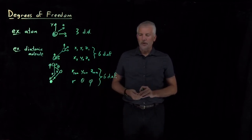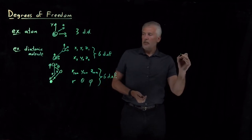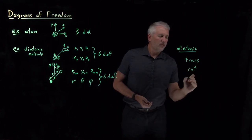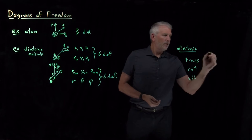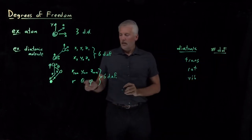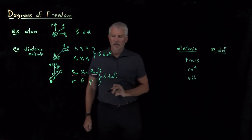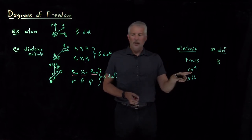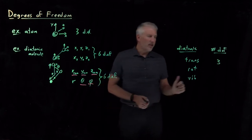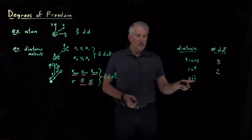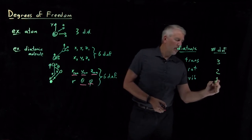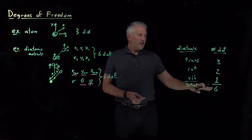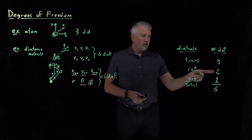If we categorize these degrees of freedom, the diatomic molecule has translational, rotational, and vibrational degrees of freedom. The three center of mass coordinates — x, y, z position of the center of mass — are the translational degrees of freedom. The rotational degrees of freedom are theta and phi, which describe its orientation, so there are two of those. The degree of freedom describing the vibrational motion — the stretch of the bond — is only a single coordinate. That adds up to six: three translational, two rotational, one vibrational.